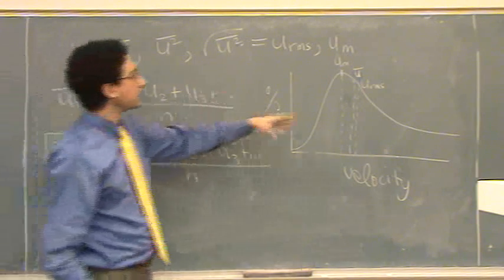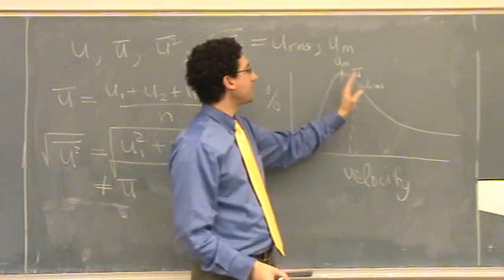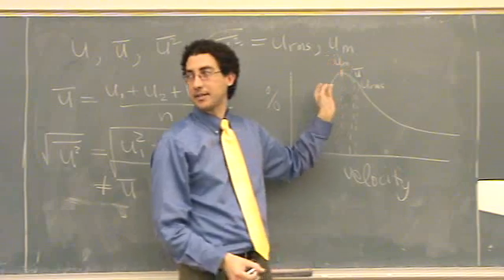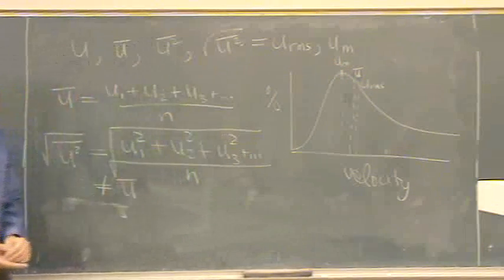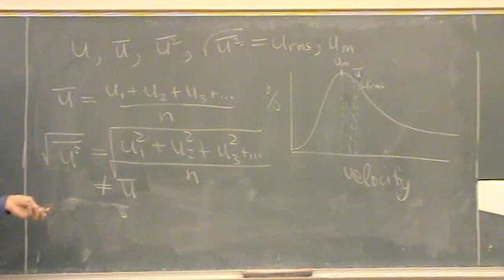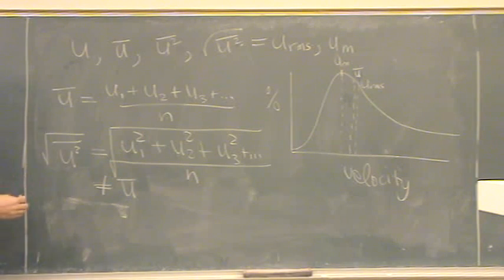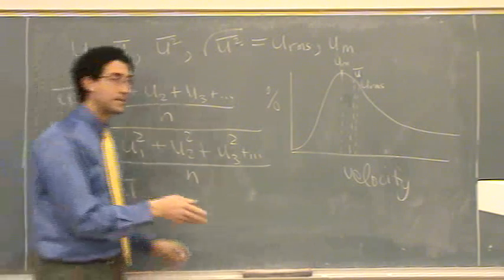You can see how they're all similar, and if you have the average, if you have one, approximately you know all the rest. And it just turns out that in chemistry and physics, when you talk about gases, root mean square velocity mathematically just pops up all over the place. So that's why we talk about it a lot. Is that okay? Yeah.